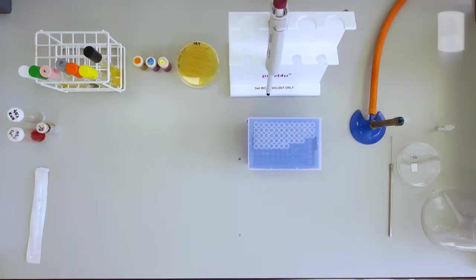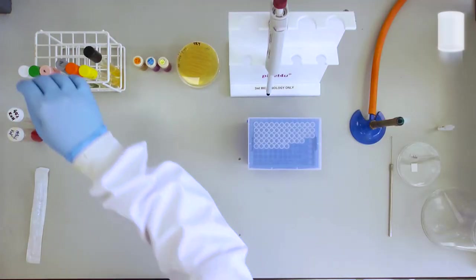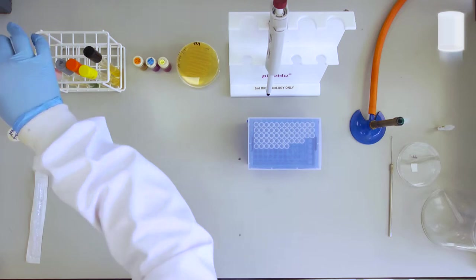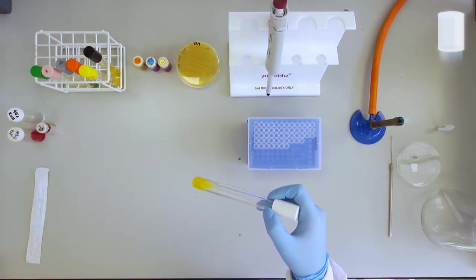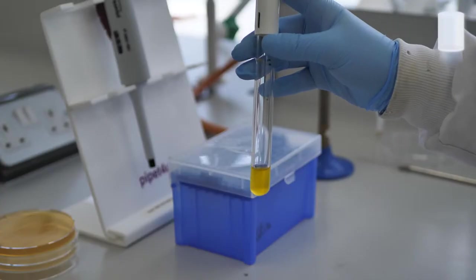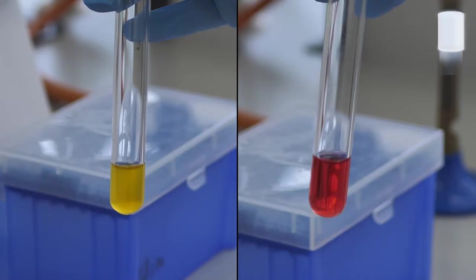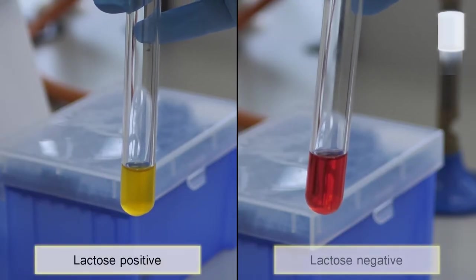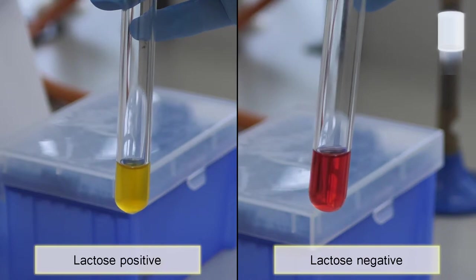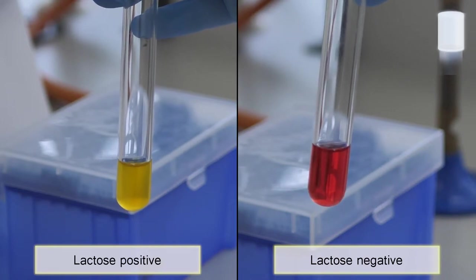For the lactose test the result is determined by observation. If the medium has turned yellow the culture is capable of utilising lactose. If the media in the tube remains red, the culture is unable to utilise lactose.